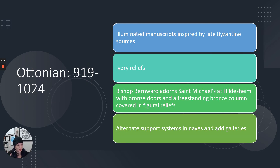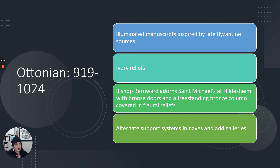Then we have the Ottonians — not the Ottomans, those are different; the Ottoman people are the Turkish people who take over after Byzantine falls. The Ottonians are a different group with a similar name. They produced illuminated manuscripts inspired by late Byzantine sources, and ivory makes a big comeback — they love carving things out of ivory. Bishop Bernward adorned St. Michael's at Hildesheim with bronze doors and a freestanding bronze column covered in figural reliefs, making bronze a more popular medium again. They also developed alternate support systems in naves and added galleries to the Basilica plan, which basically wins out over the central plan and becomes the way most churches are designed in Europe from here on out.